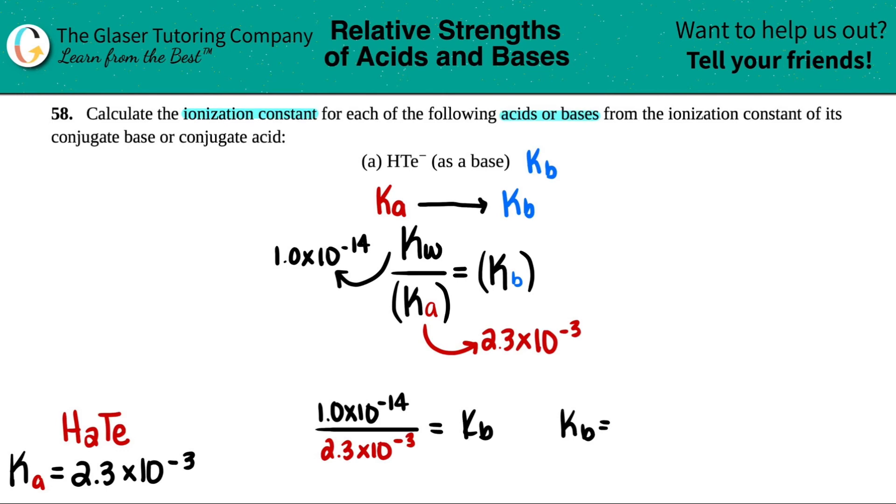Two sig figs. So 4.3. That's 4.3 times 10 to the negative 12th. And that's it.